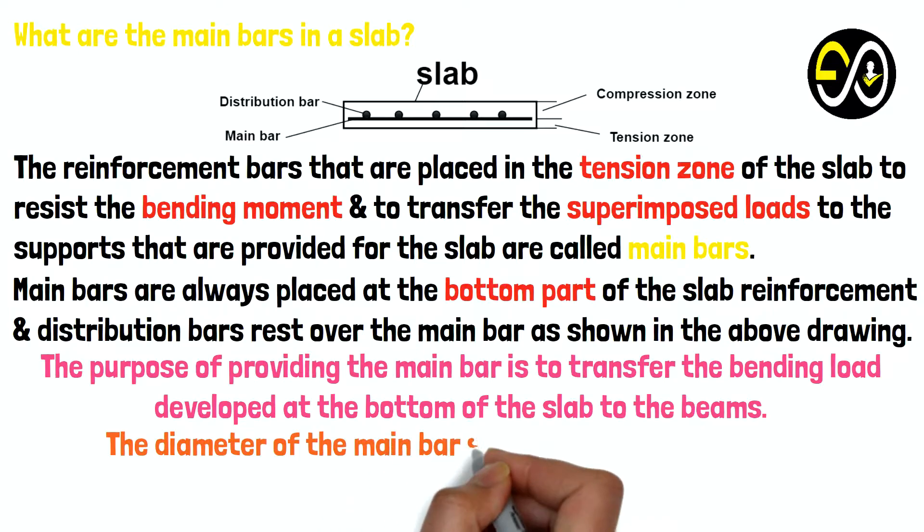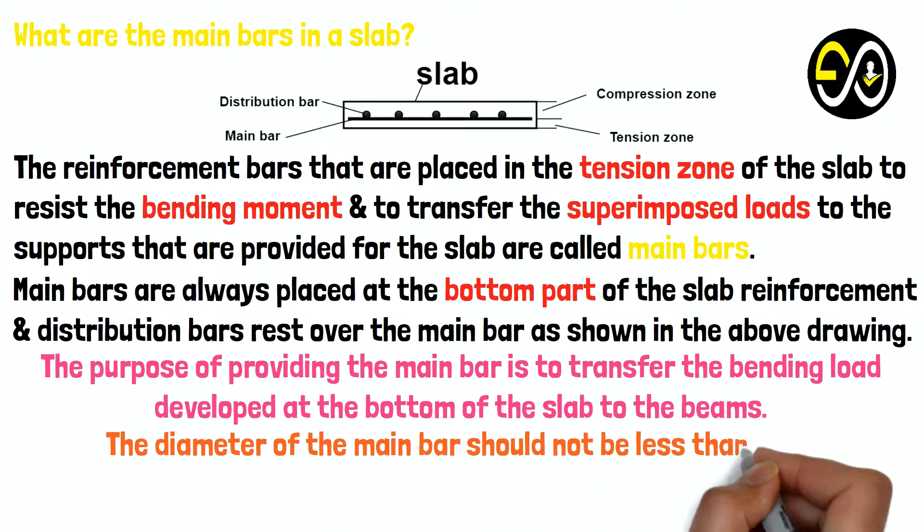The diameter of the main bar should not be less than 8 mm for the HYSD bar and 10 mm for plain bars.